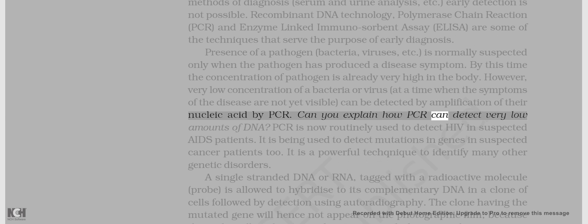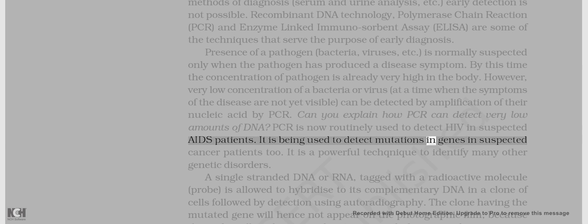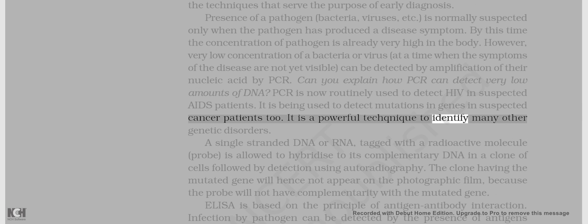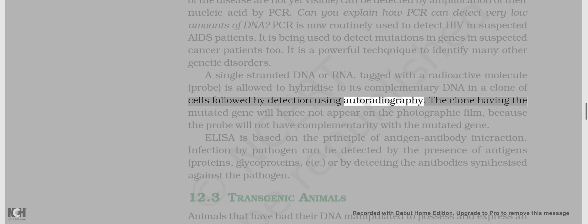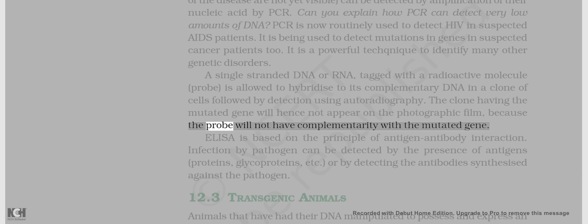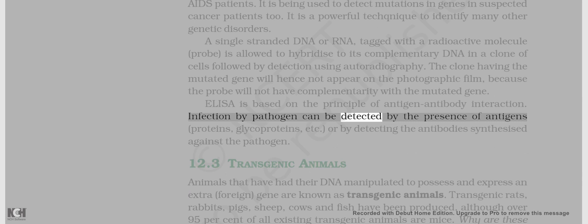PCR is now routinely used to detect HIV in suspected AIDS patients. It is being used to detect mutations in genes in suspected cancer patients too, and is a powerful technique to identify many other genetic disorders. A single-stranded DNA or RNA, tagged with a radioactive molecule — probe — is allowed to hybridize to its complementary DNA in a clone of cells followed by detection using autoradiography. The clone having the mutated gene will not appear on the photographic film because the probe will not have complementarity with the mutated gene. ELISA is based on the principle of antigen-antibody interaction. Infection by pathogen can be detected by the presence of antigens — proteins, glycoproteins etc. — or by detecting the antibodies synthesized against the pathogen.